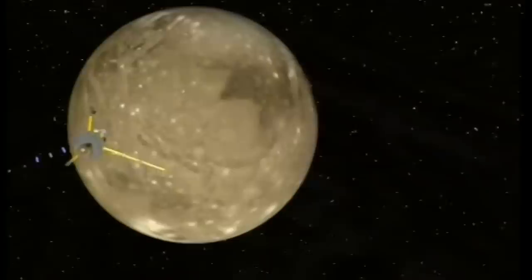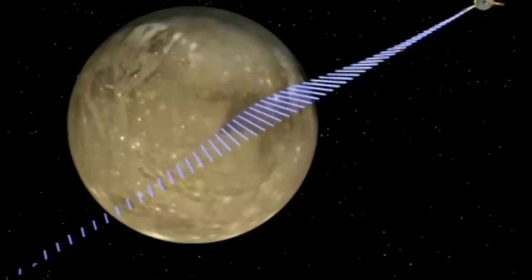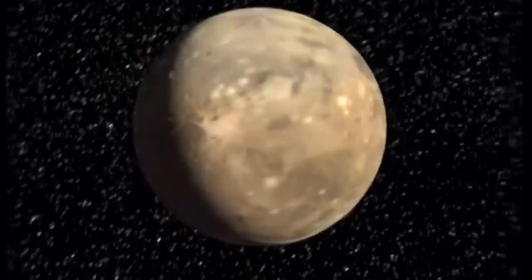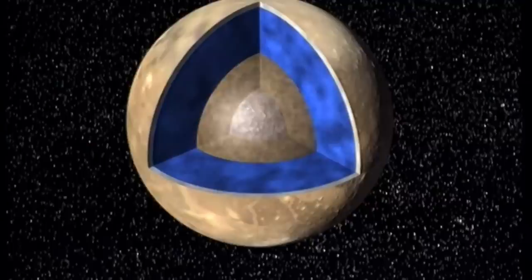Ganymède est le plus gros satellite de tout le système solaire. Il est même plus gros que la planète Mercure. Autour de Ganymède, Galiléo détecte un faible champ magnétique qui laisse deviner la structure interne de ce satellite. Sous la croûte s'étend un manteau de neige fondue, puis une couche de roche et de glace entourant un noyau de silice.